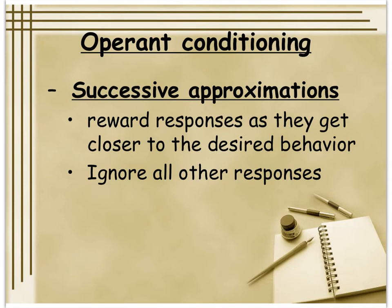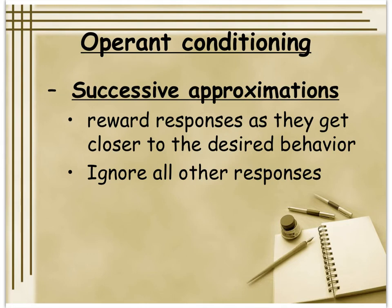With humans, delayed reinforcement can work if you verbally confirm it immediately. For example: 'You did all your homework — you will be allowed to use your computer for an hour after dinner because you earned it.' You just say it right away so the correct associations are made. Or a class is promised a pizza party if they do X, Y, and Z — when they earn it, you tell them right away so the right associations are being made. Easier with humans than with other animals.